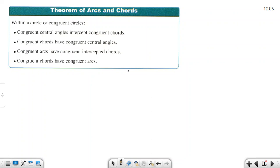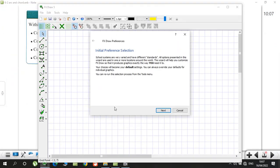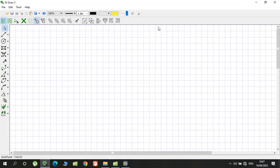Within a circle, or congruent circles, congruent central angles intercept congruent chords. So very interesting. Congruent central angles intercept congruent chords. Congruent chords have congruent central angles. Congruent arcs have congruent intercept chords. There are lots of things certain, so let's explain them one by one.